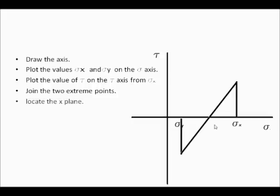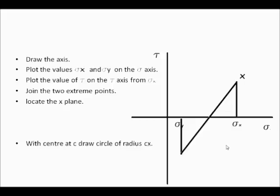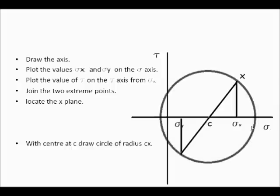This gives us our center and this point is our x-plane. As we can see, sigma x and tau are acting — sigma x is acting on the x-plane and positive tau is acting on the x-plane, so this is our x-plane. The center is C. Now we have to draw the circle with center C and radius Cx. This is our Mohr circle.